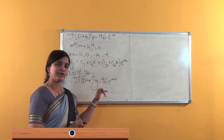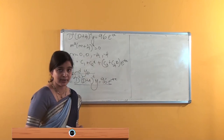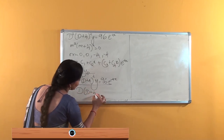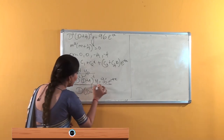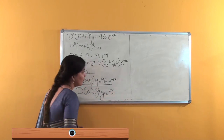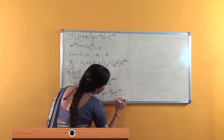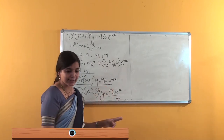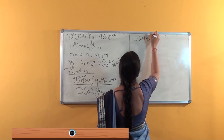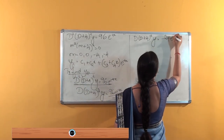We will shift e to the power minus 4x and solve. To make it easier, we will integrate with respect to x — not differentiate. When we integrate, we get D(D plus 4) whole squared into y equals 96 times e to the power minus 4x divided by minus 4. The terms simplify, and we get D(D plus 4) whole squared into y equals minus 24 e to the power minus 4x.